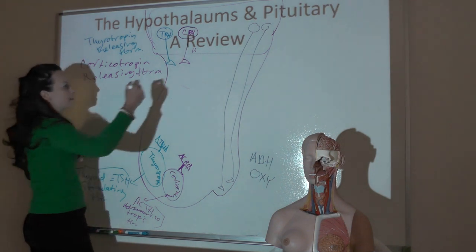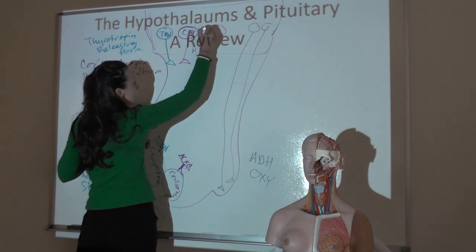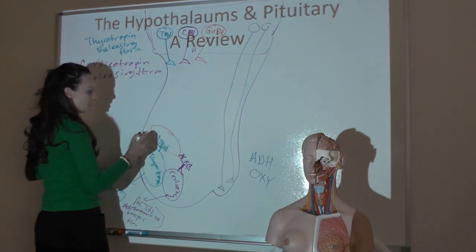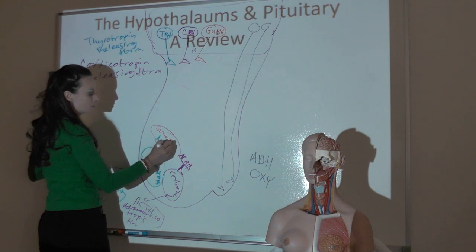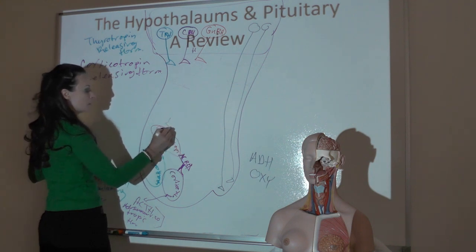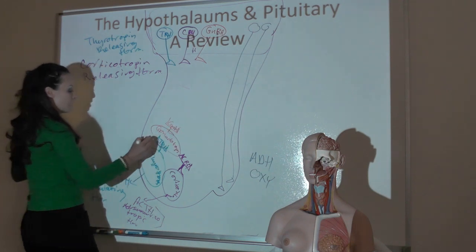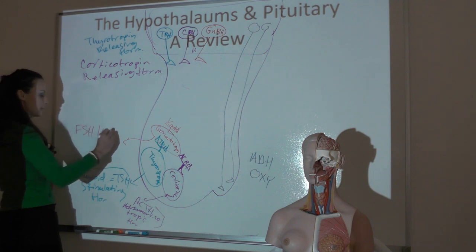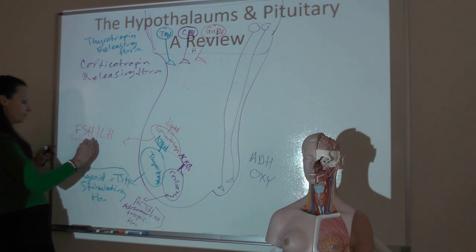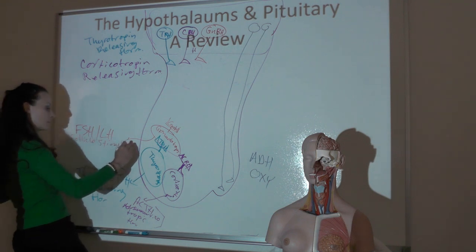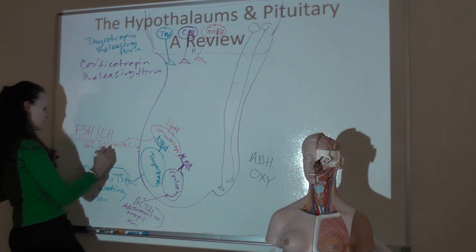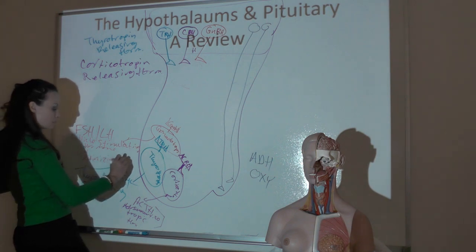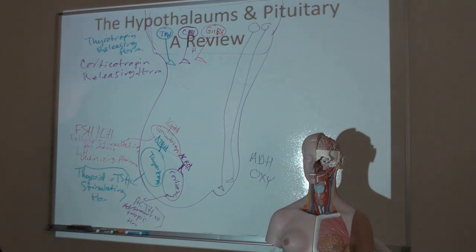The HPG axis—the hypothalamo-pituitary-gonadal axis—starts with gonadotropin-releasing hormone, or GnRH, which targets cells in the anterior pituitary called gonadotropes. They're the only ones with GnRH receptors, and when GnRH is bound, they release two gonadotropin hormones: FSH, the follicle-stimulating hormone, and LH, the luteinizing hormone. These enter the blood and target the gonads.